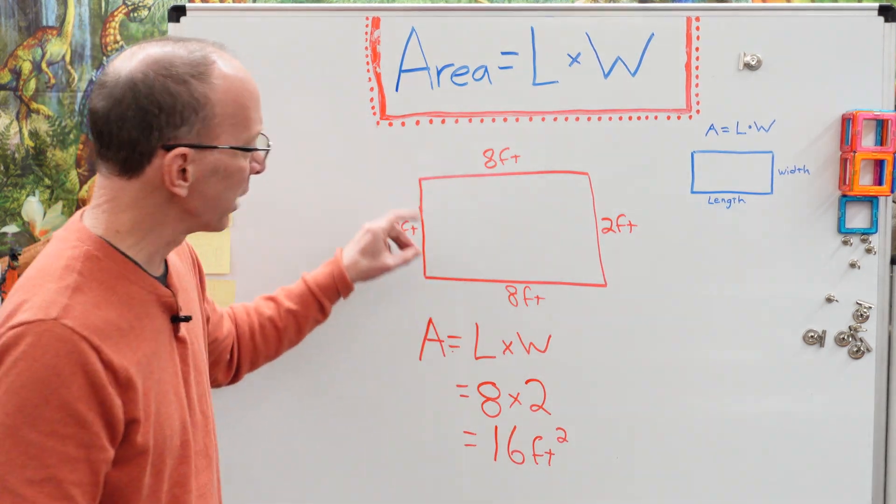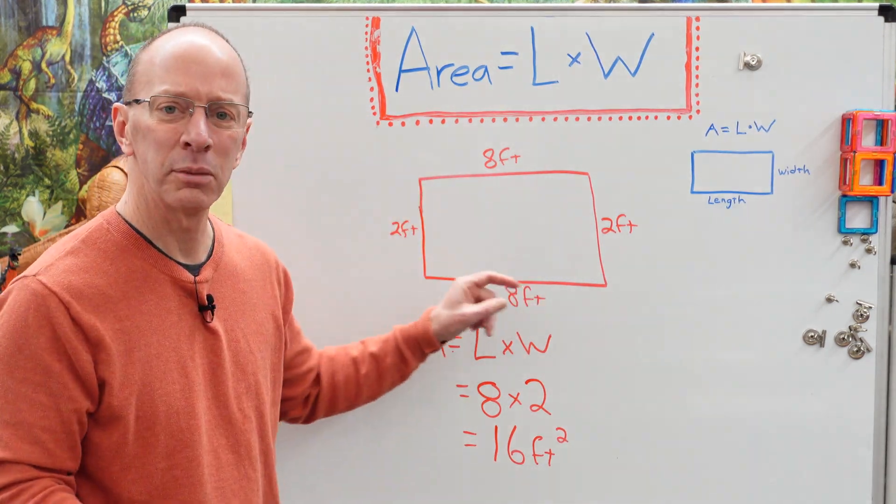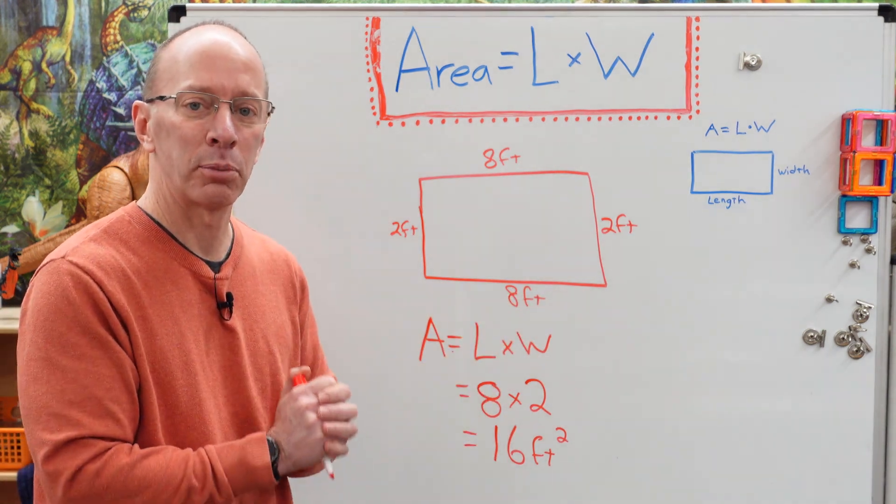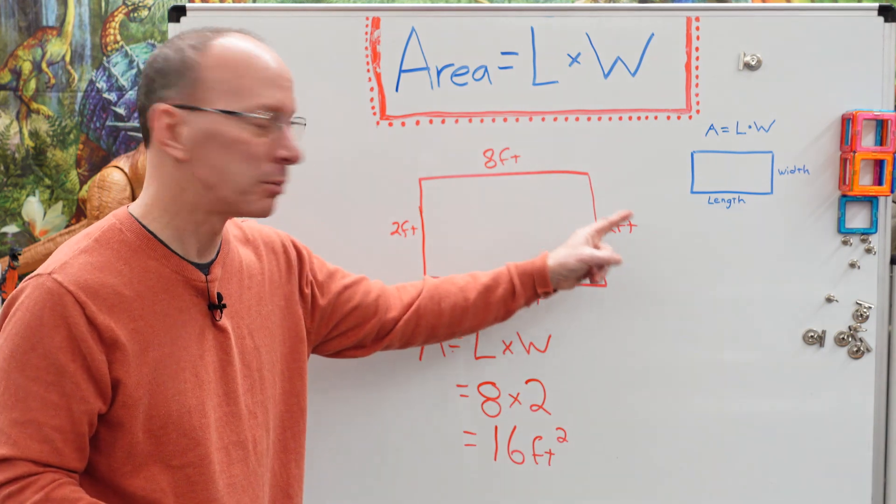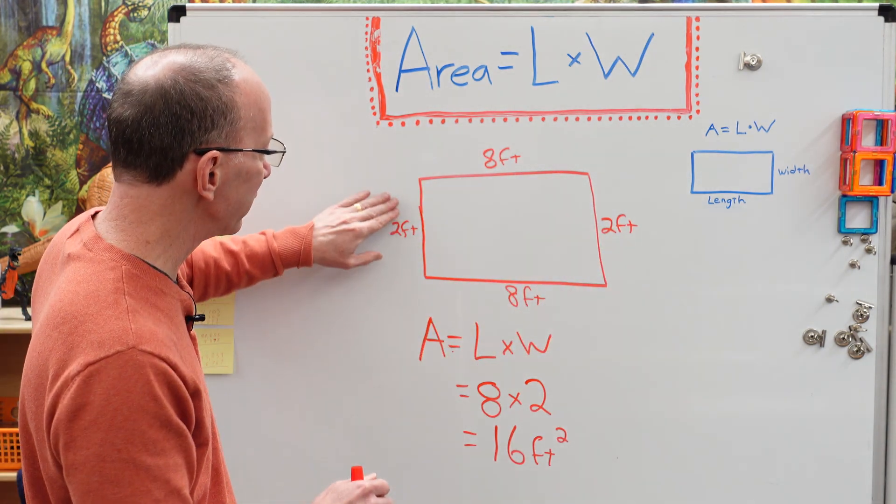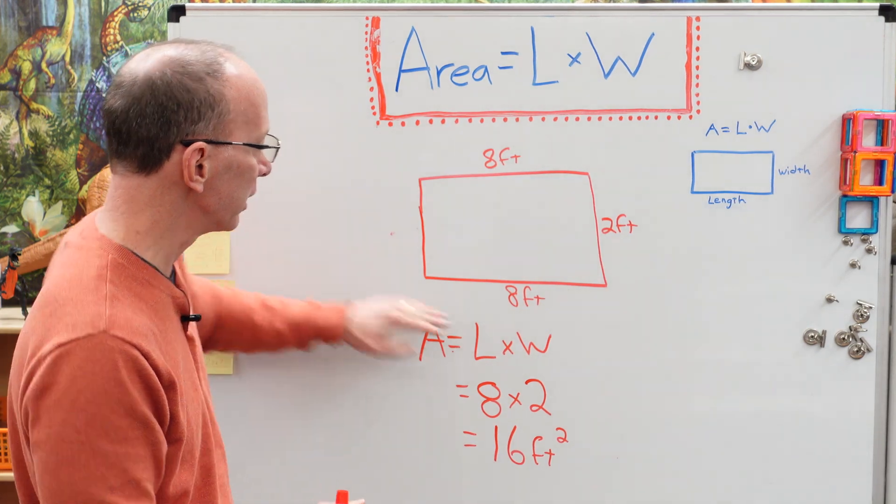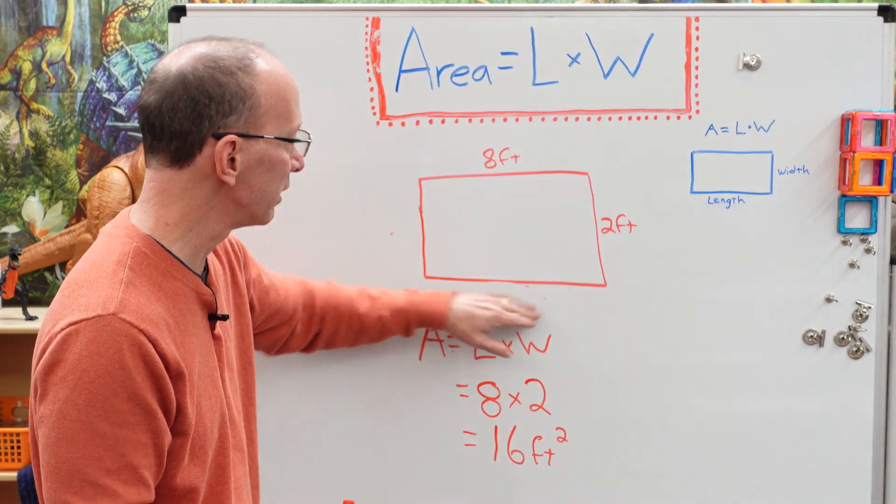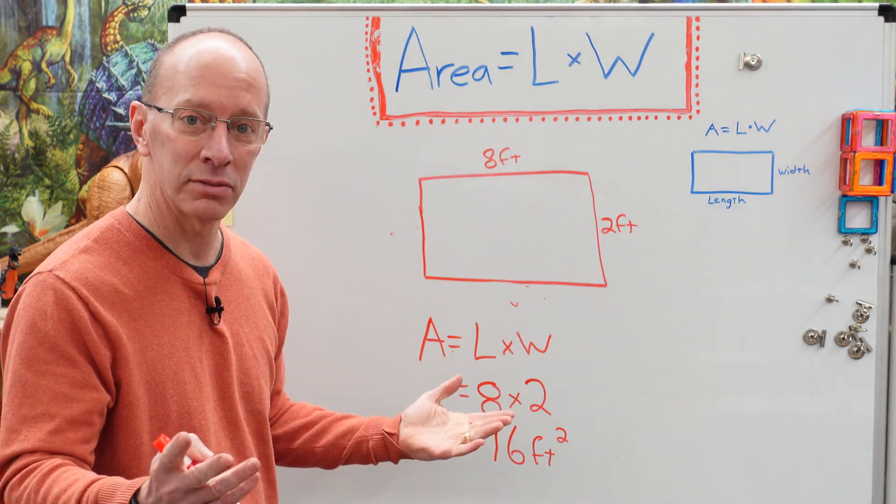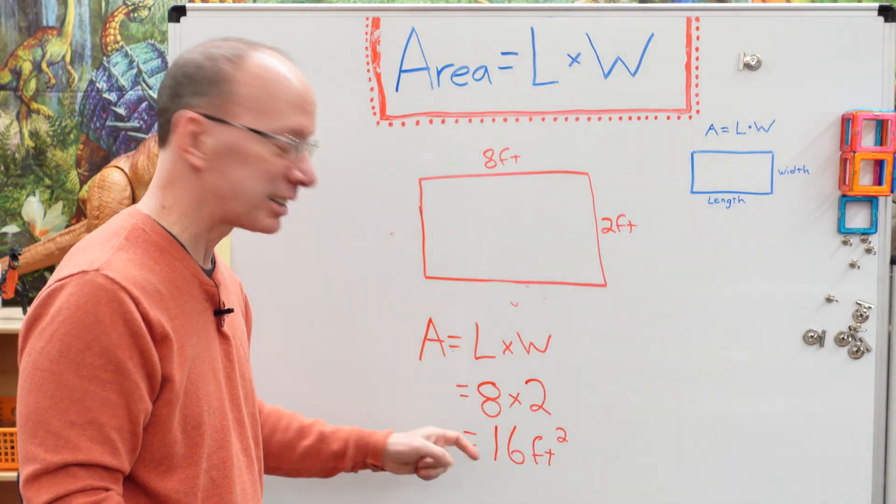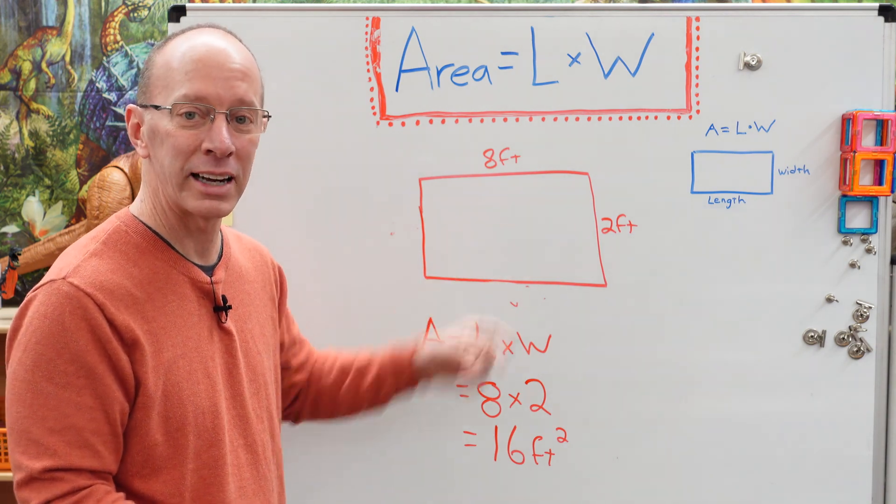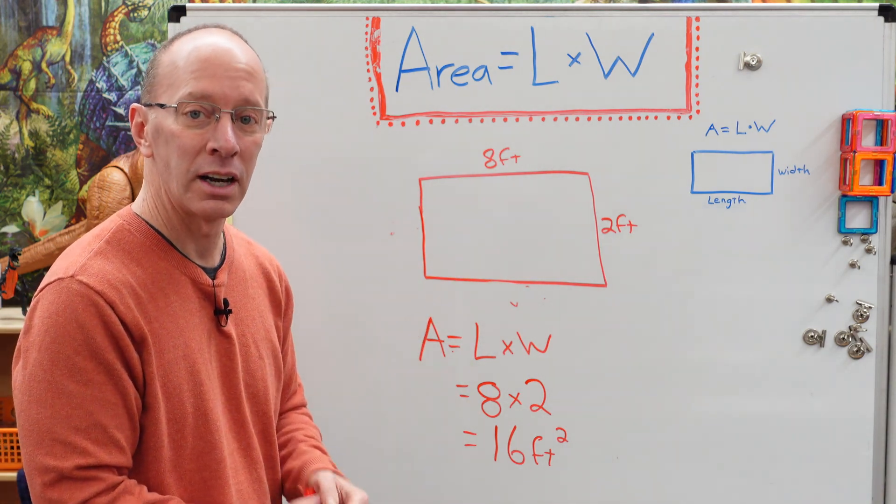Now, some of you are like, well, what about all these other numbers? Should I add them up? Should I multiply them? No. All right. Later on, when we talk about perimeter, that's when we're going to take a look at the numbers all around here. But basically, you don't need to know this one here. You don't need to know that right there. Just the length times the width. That's good enough. All right. That gives you 16 squared feet. So if I had to put carpet down in a room like that, I need to buy 16 squared feet of carpet.